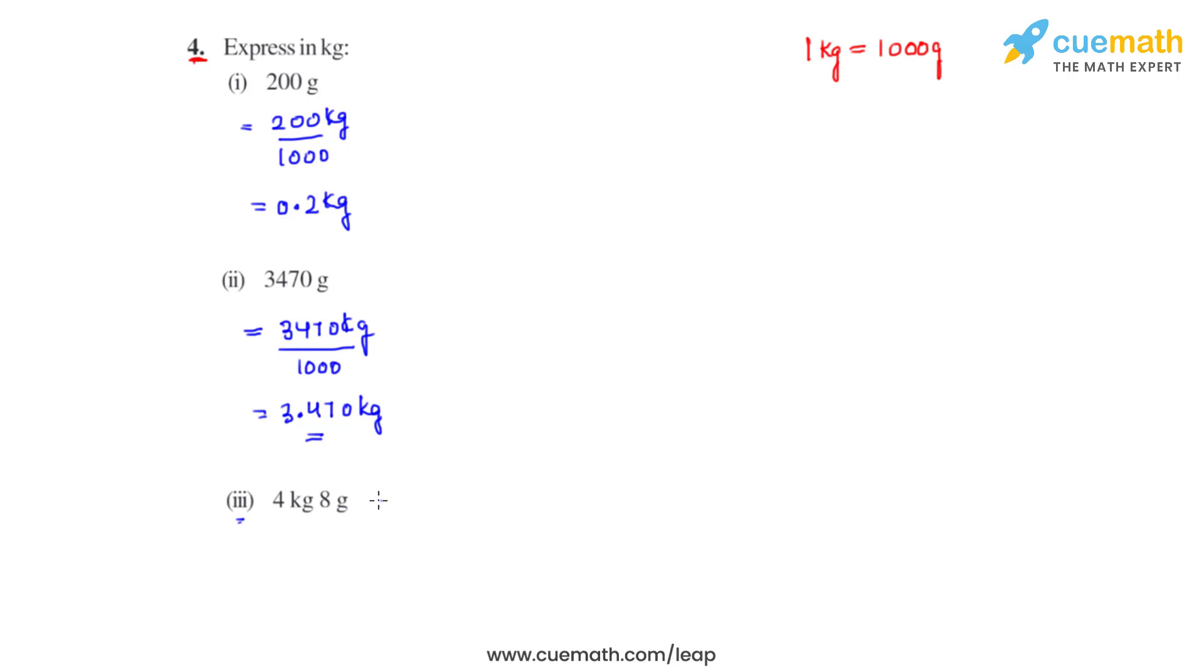we have 4 kg and 8 grams, which can be written as 4 kg plus 8 grams to be converted into kilograms. That will be 8 divided by 1000 kilograms, which equals 4 kg plus 0.008 kilograms. When we add these two, the sum that we get is 4.008 kilograms, and this is how we solve this problem.